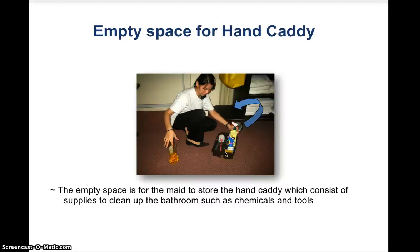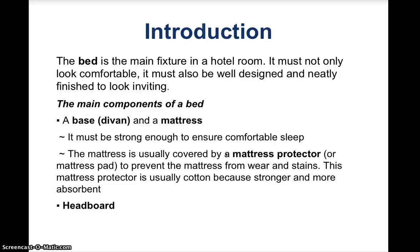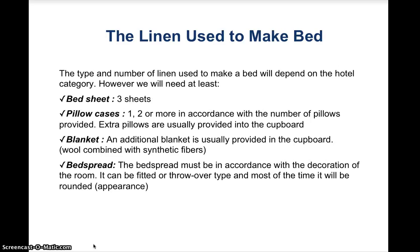Bed making is the most important and beautiful feature of a room. The bed is a main fixture in a hotel room — it must not only look comfortable but also be well designed and neatly finished to look inviting. The main components are the base, which is a divan, and a mattress covered by a cotton mattress protector or mattress pad to prevent wear and stains. The linen used to make a bed includes bedsheets, pillowcases, blanket, and bedspread.